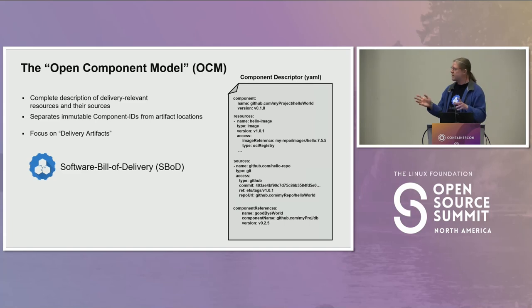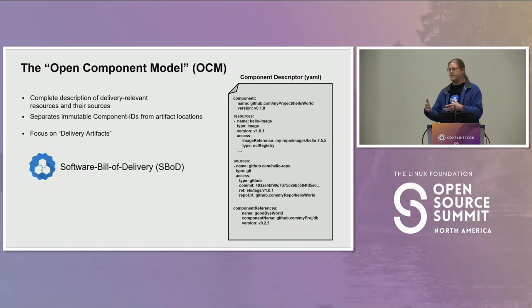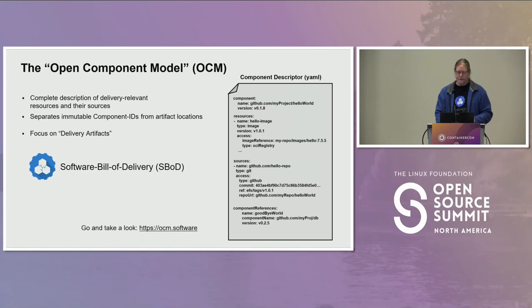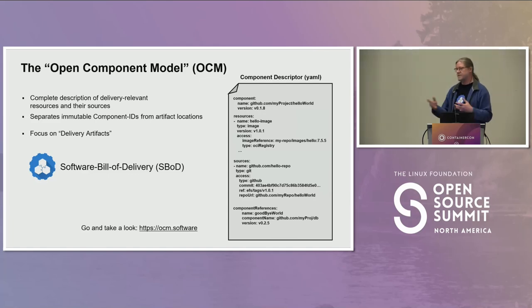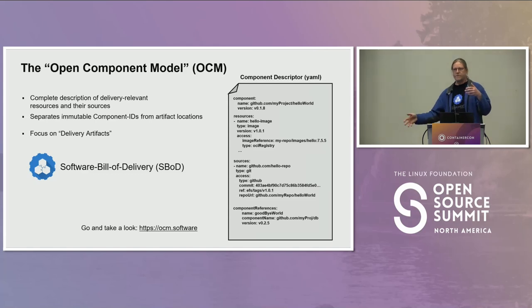OCM is focused on delivery artifacts — we're introducing the term 'software bill of delivery' to describe what it provides. It also supports nesting: one component can be comprised not just of resources like a Docker image and a Helm chart, but also of other components, so you can have a full dependency chain represented.